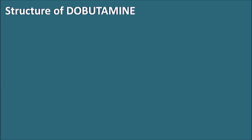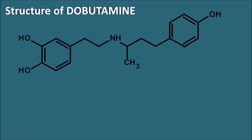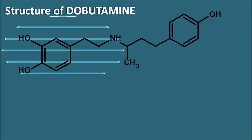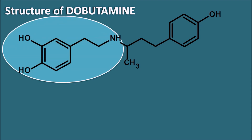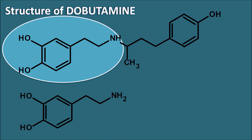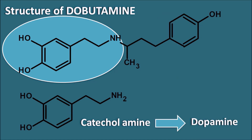Now let us see the structure of Dobutamine. Within the structure we can observe one important moiety — this is nothing but a catecholamine. You can observe the catechol group which is attached with the ethylamine. This is a simple structure of a catecholamine, and a catecholamine without the hydroxyl group at the beta portion is simply Dopamine.